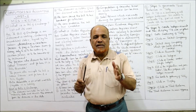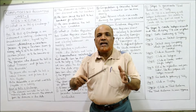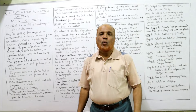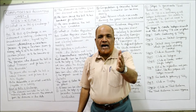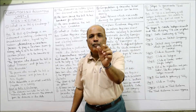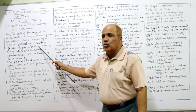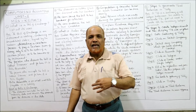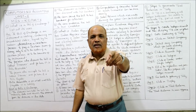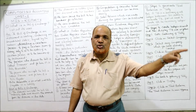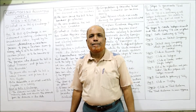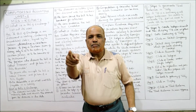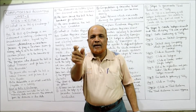It must be signed by the maker; without signing it is invalid. The bill directs a certain person to pay a certain sum of money. It directs another person — A is directing B that B should pay the amount to C. So C is called the payee.